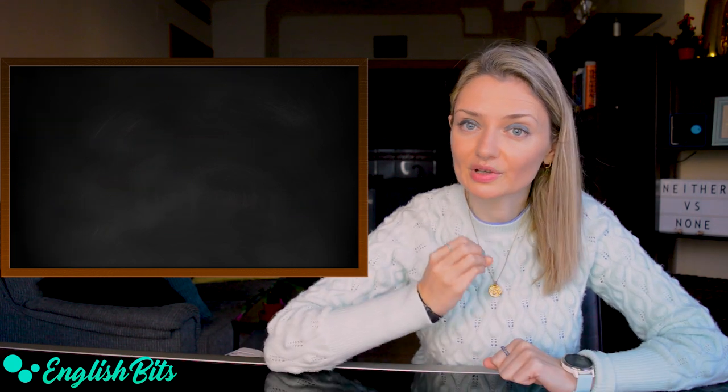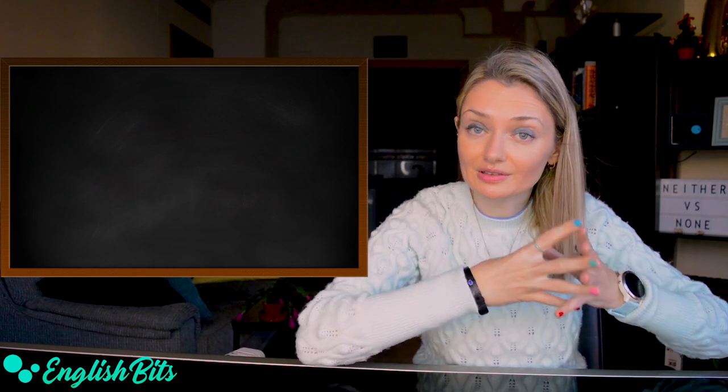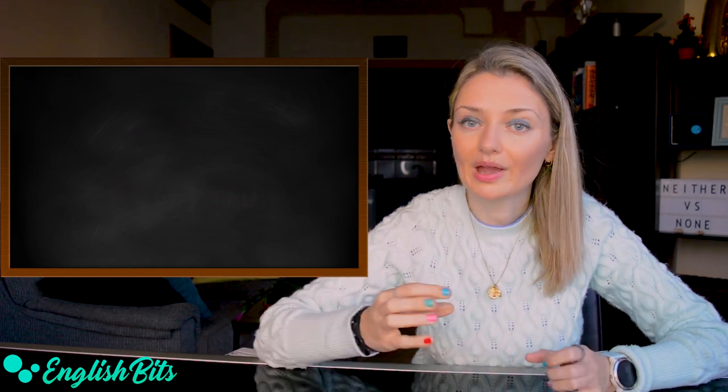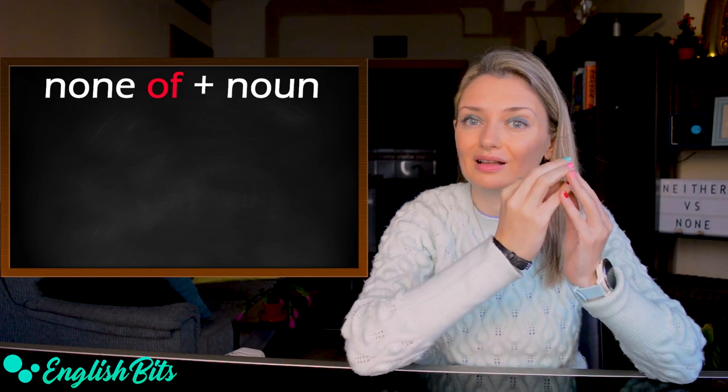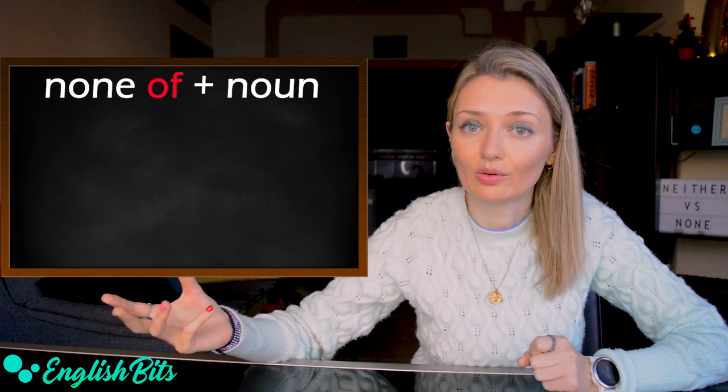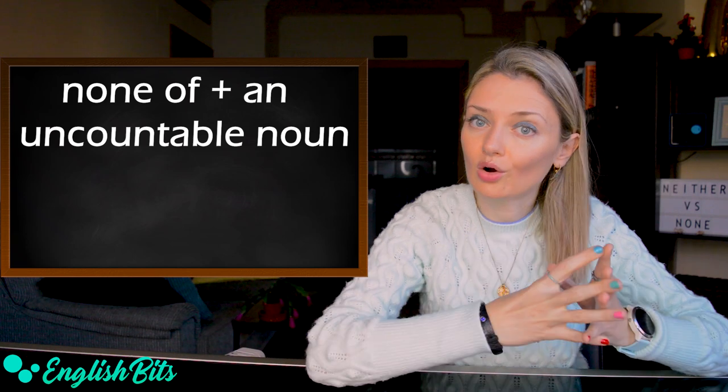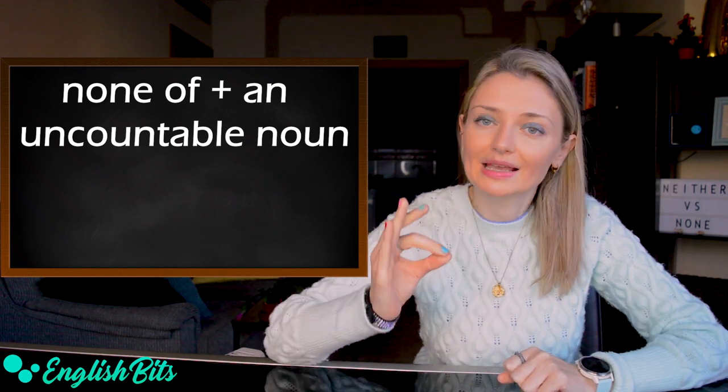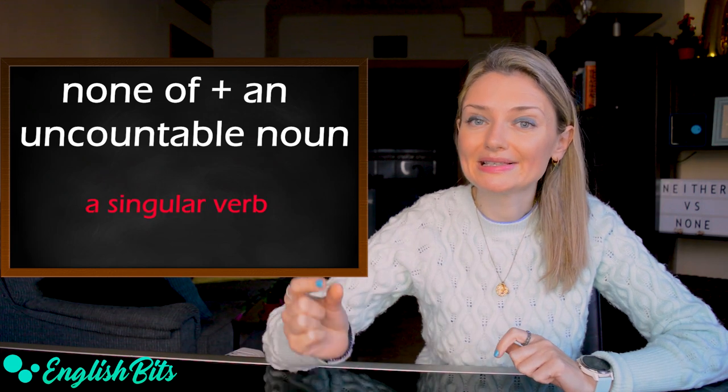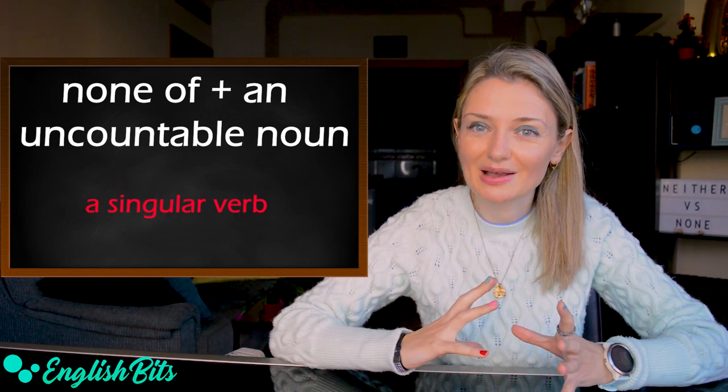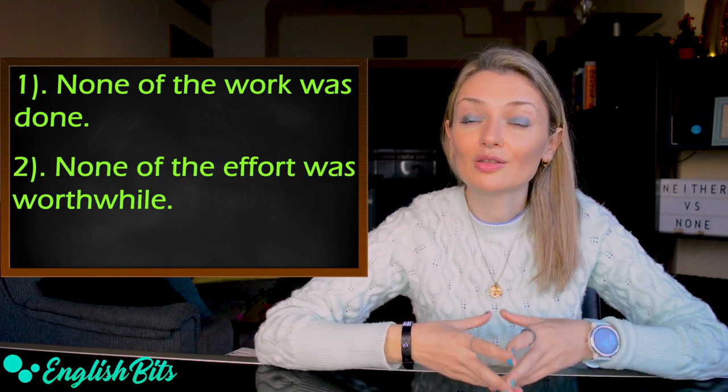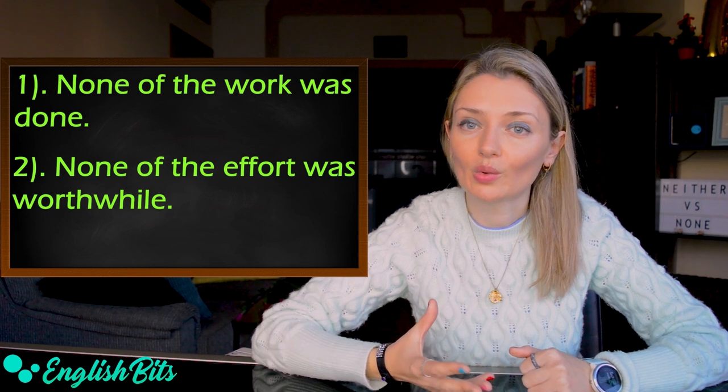A very important point here is that after none, we can't use directly a noun. We have to add of. None of and then a noun. If we have none of followed by an uncountable noun, in this case, we have to use a singular verb. Two examples: none of the work was done. And one more example here: none of the effort was worthwhile.